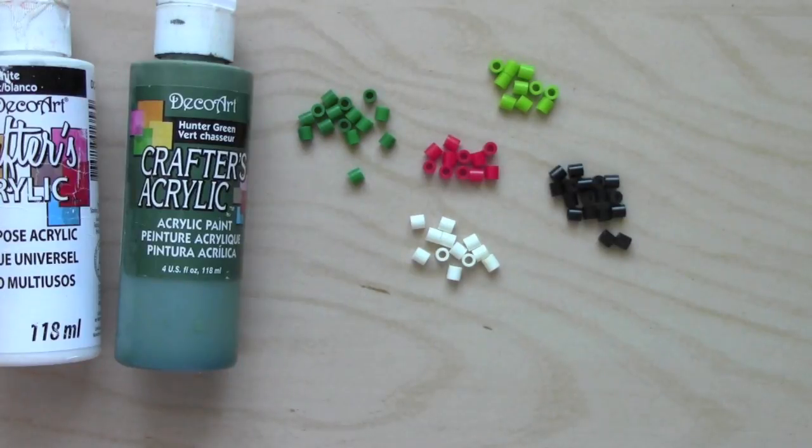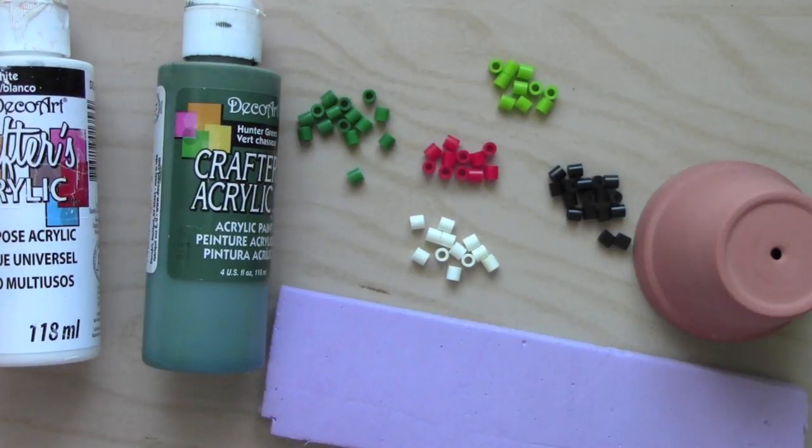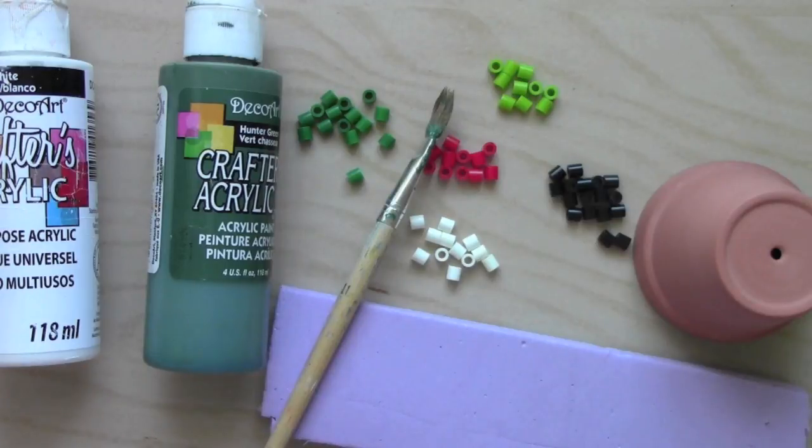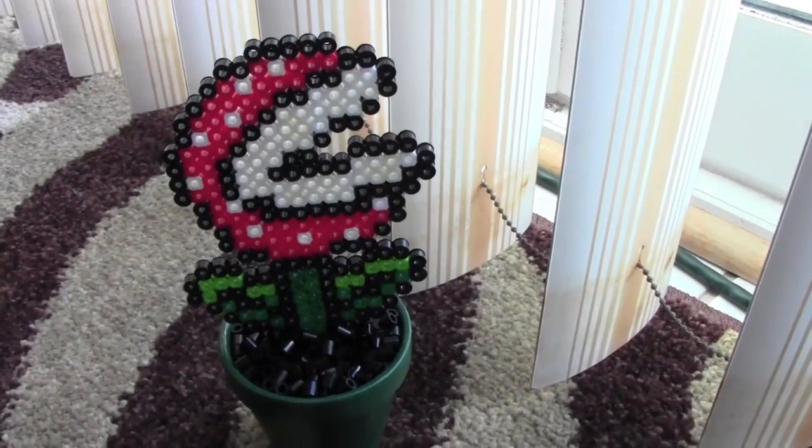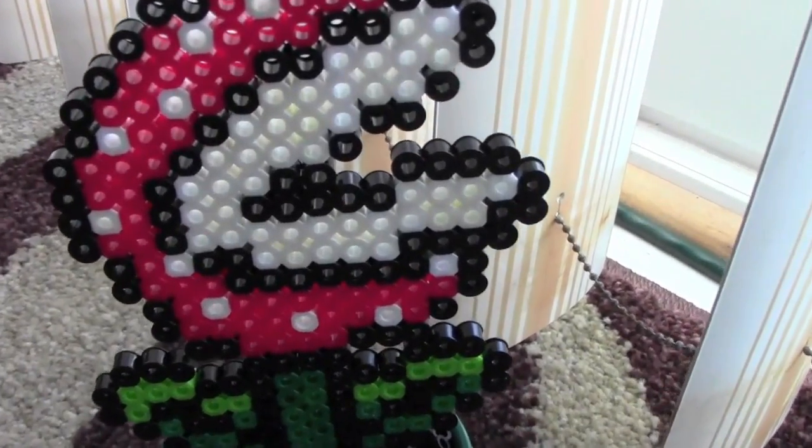You will also need paint, foam, a little terracotta pot, and of course a paintbrush. Let's get started with the outline of this little guy.